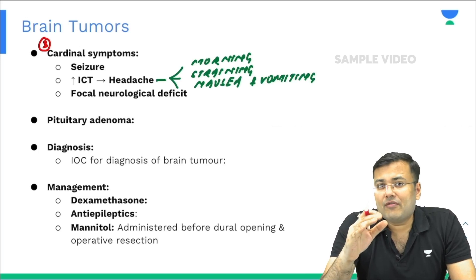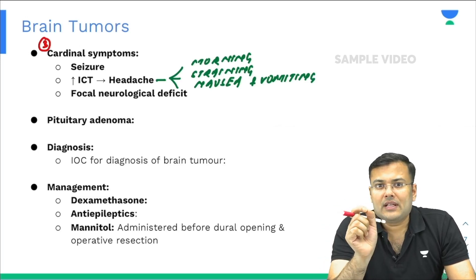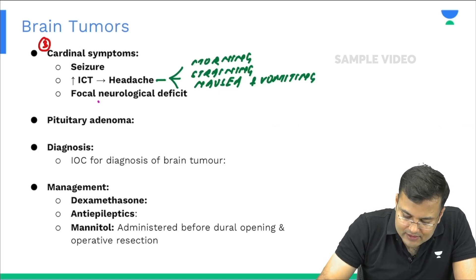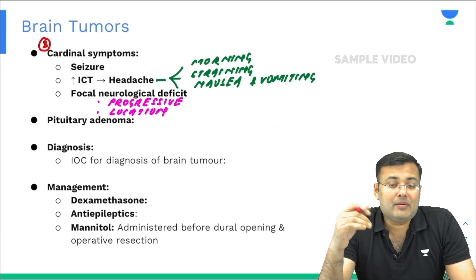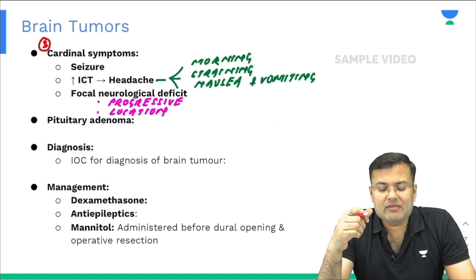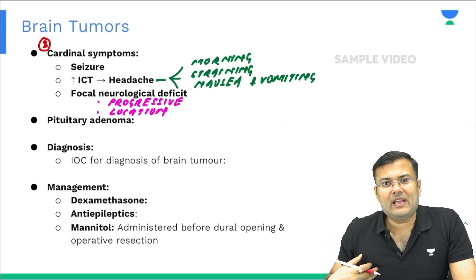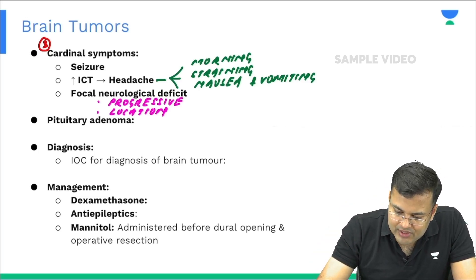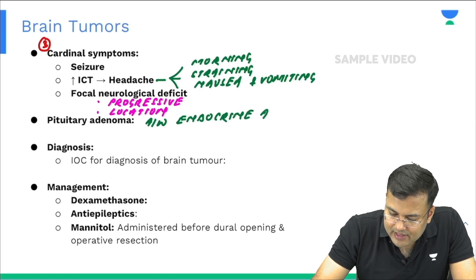Regarding focal neurological deficit: the deficit depends on the location of the tumor, and it is progressive in nature because the tumor size increases over time. For example, a patient with pituitary adenoma will have endocrine abnormalities. The most common pituitary adenoma is prolactinoma, causing galactorrhea and amenorrhea.